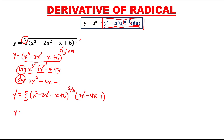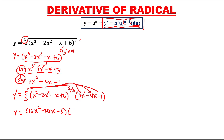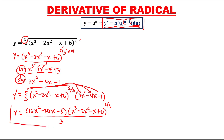To simplify, multiply 5 into du: 5 times 3x squared is 15x squared, 5 times negative 4 is negative 20x, and 5 times negative 1 is negative 5. Since the exponent is positive, the expression stays in the numerator. So the derivative is 15x squared minus 20x minus 5, times x to the power 3 minus 2x squared minus x plus 6, to the power 2 over 3, all over 3.